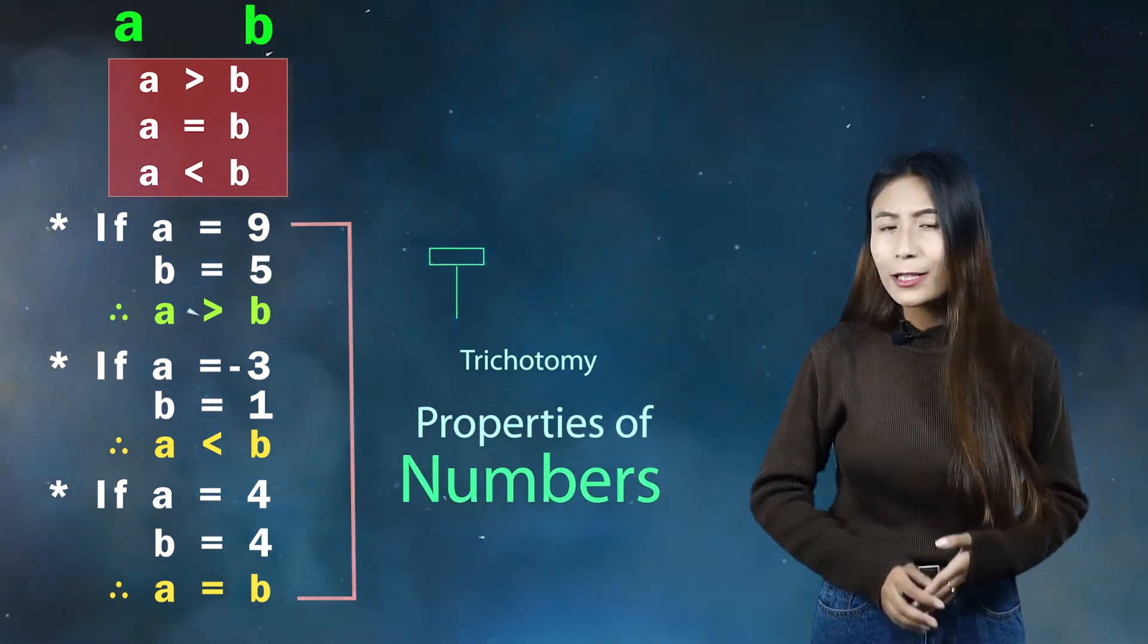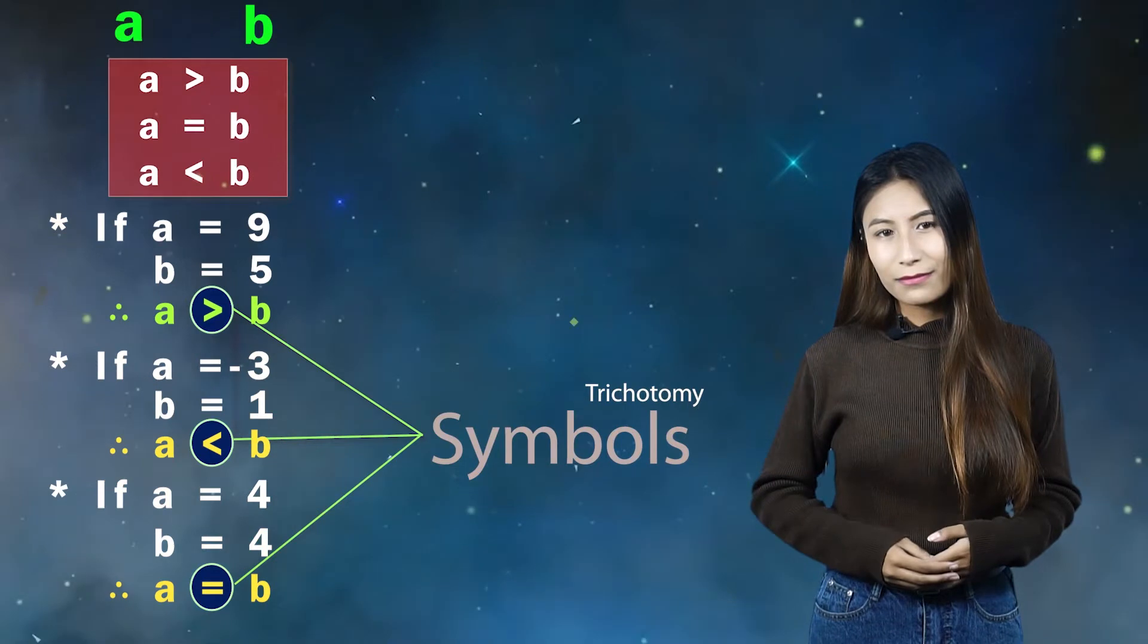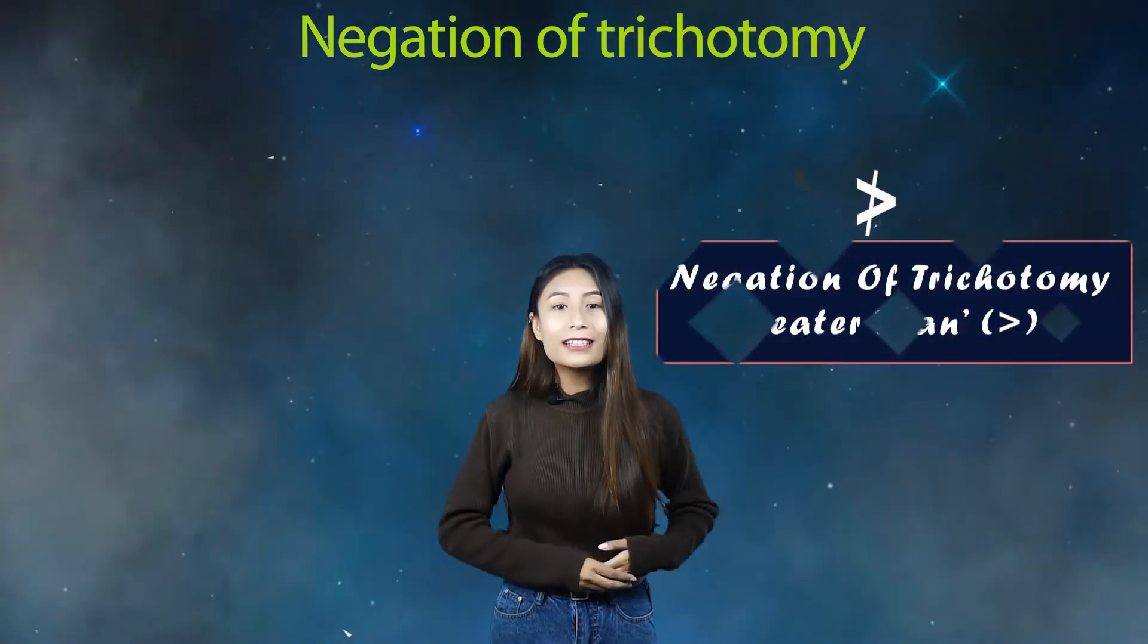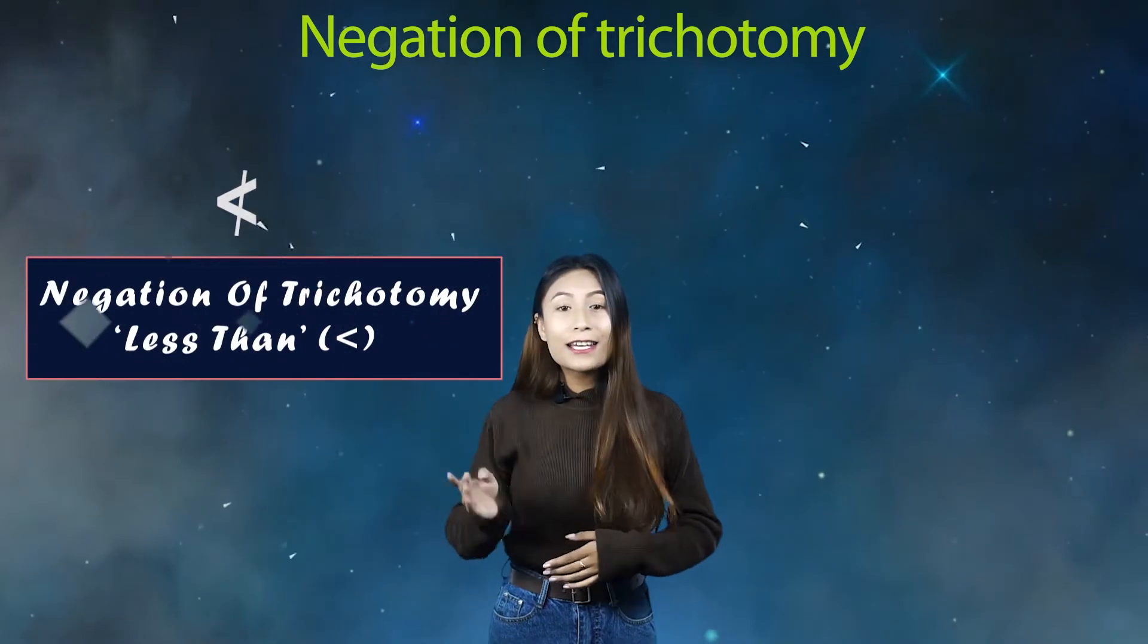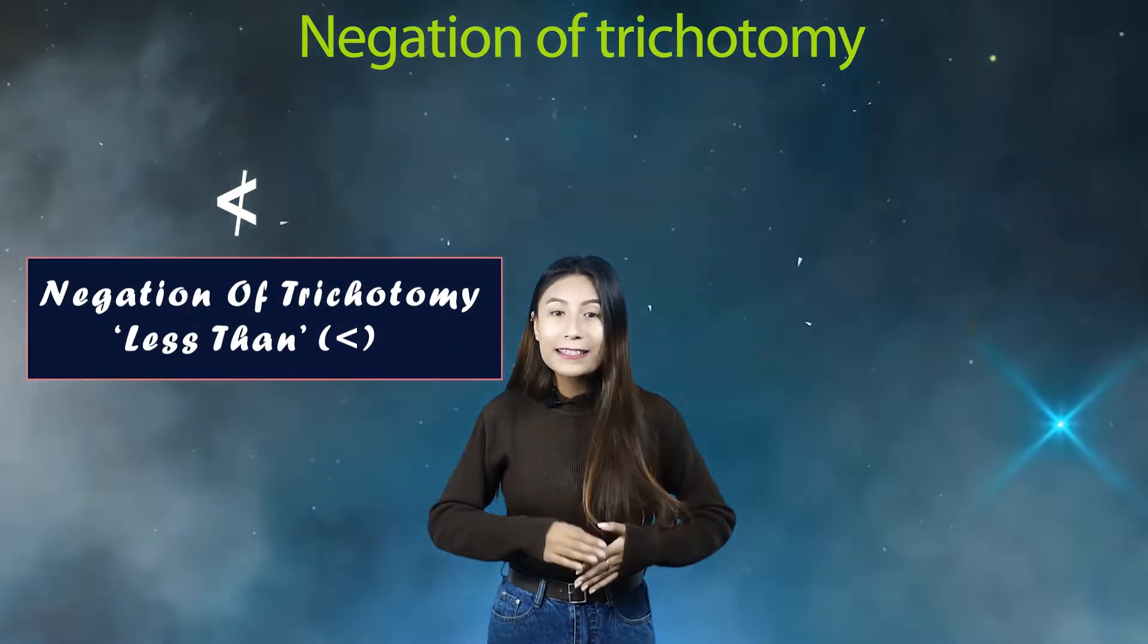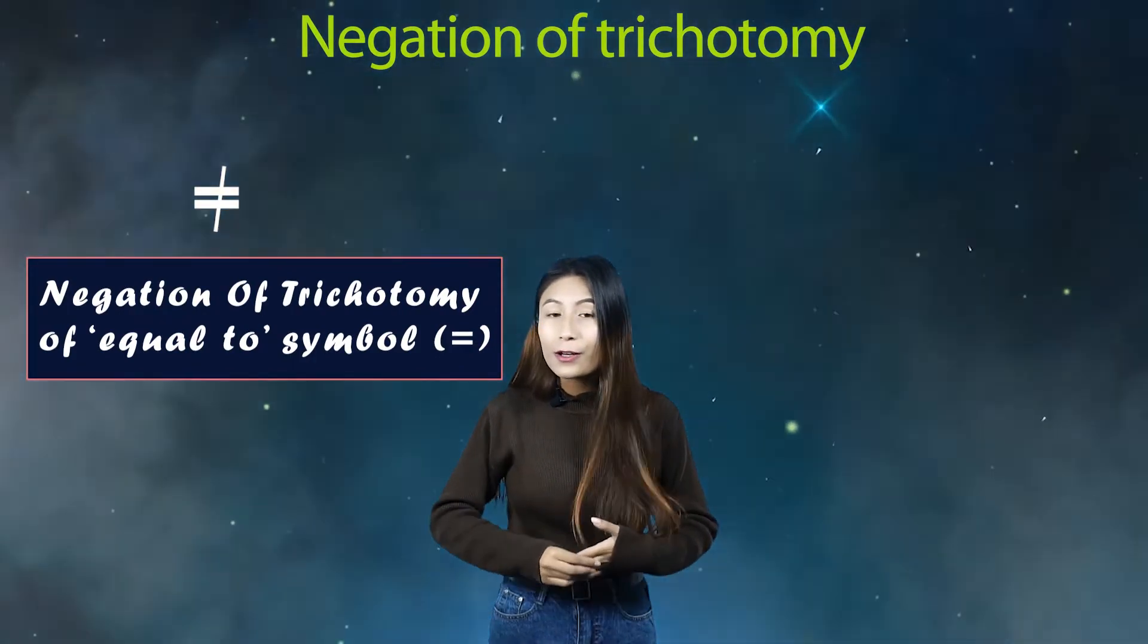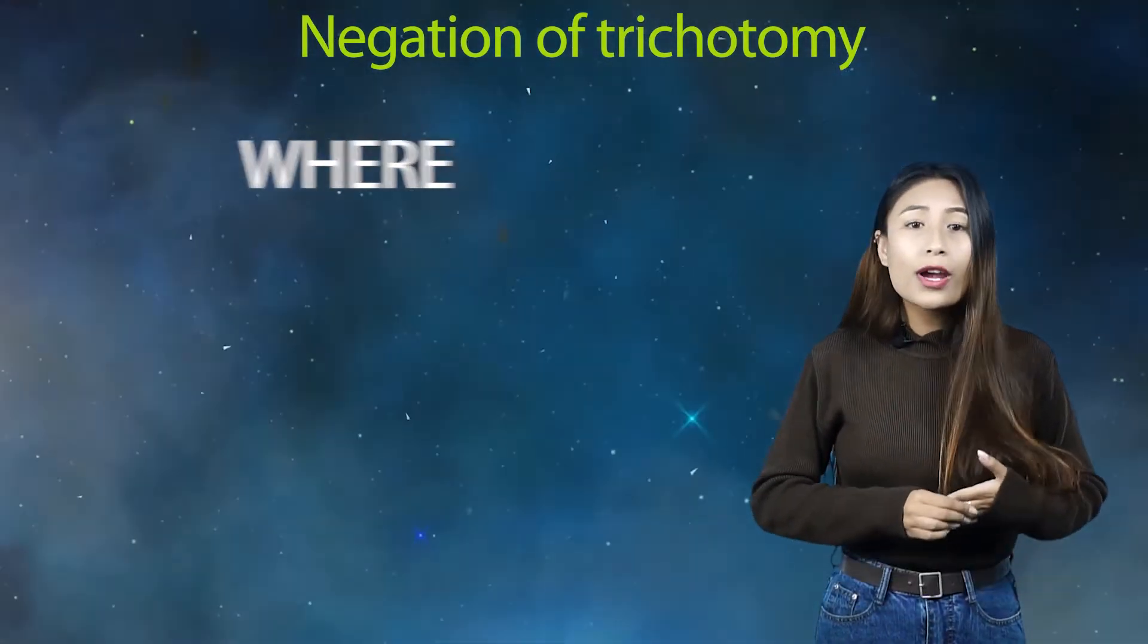There is something called negation of trichotomy. For example, this is the negation of trichotomy greater than, this is the negation of trichotomy of less than, and this is the negation of trichotomy of is equal to symbol. The question is where are these symbols used?